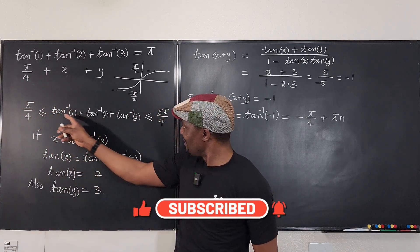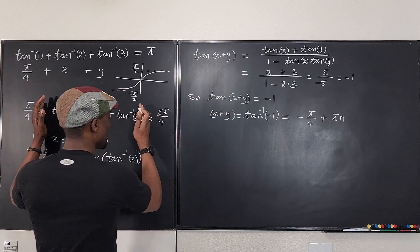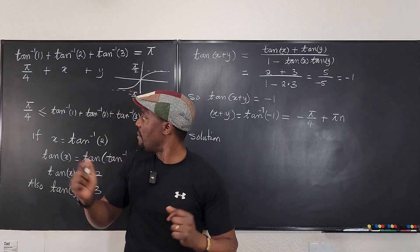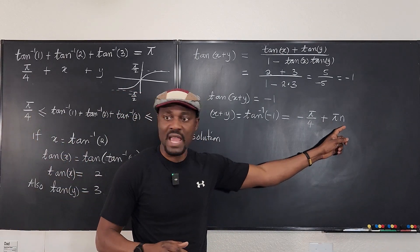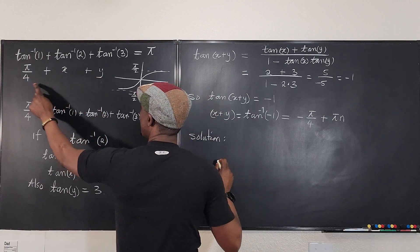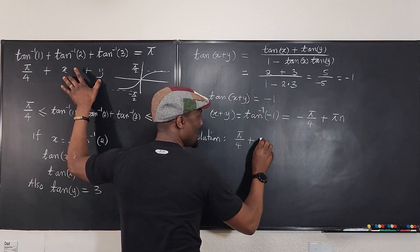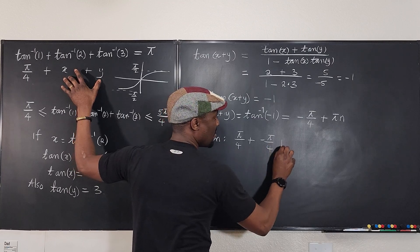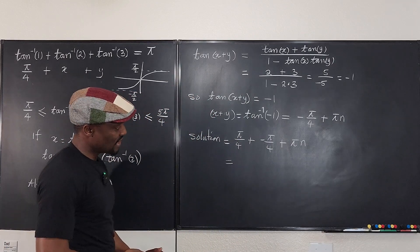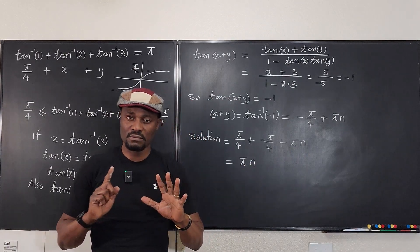We just need to go back here. So now let's see. We said that this answer we're looking for, our solution, is between π/4 and 5π/4. But let's see. We're going to add this to this plus this. So π/4, we're going to have π/4 plus x plus y. We know x plus y is this, which is negative π/4 plus πn. Nice. What does it give us? Well, this gives us zero. And what do we have left? πn.